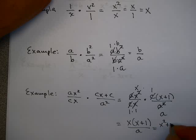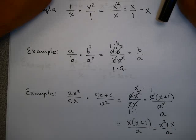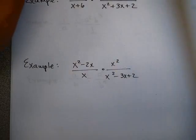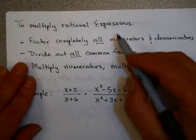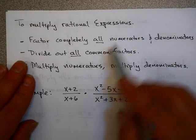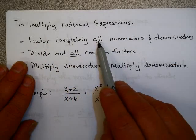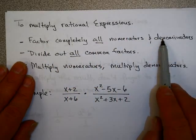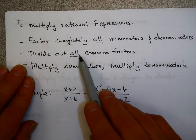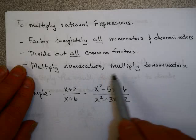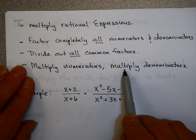Or if I wanted to multiply it in, I could do this. This technique can be summarized in this chart. To multiply rational expressions: factor completely all numerators and denominators in your problem, then divide out all common factors, then multiply the numerators and multiply the denominators.